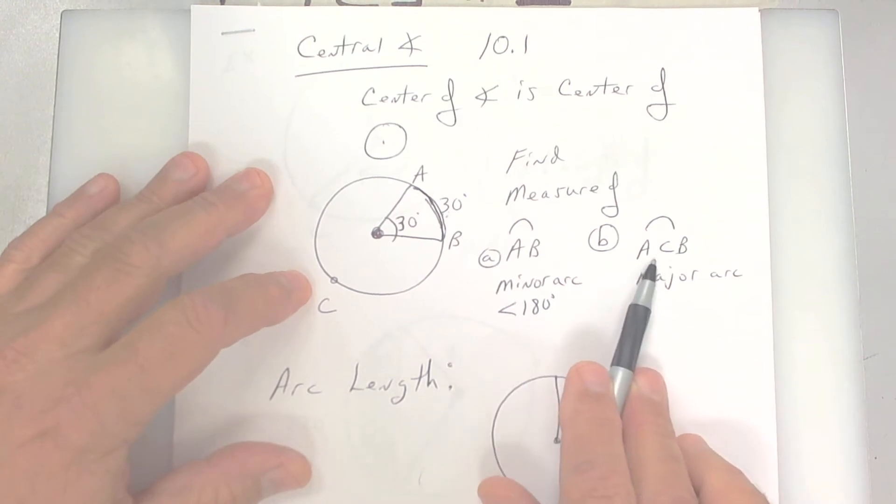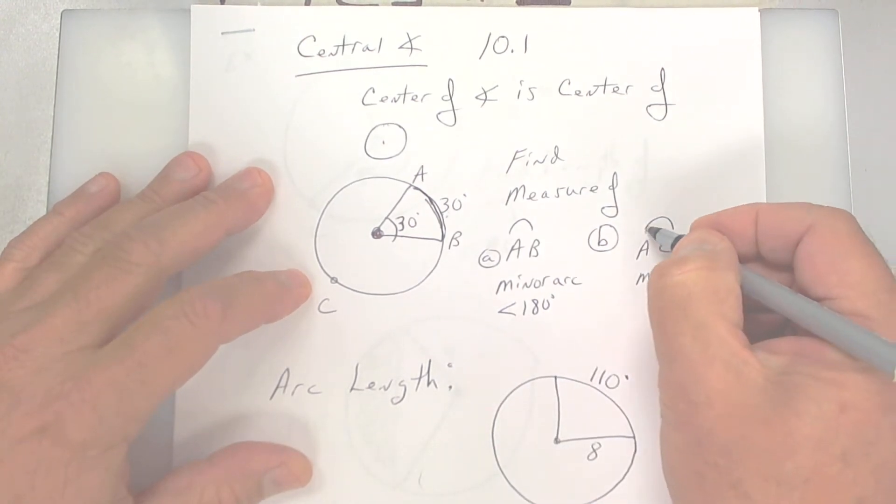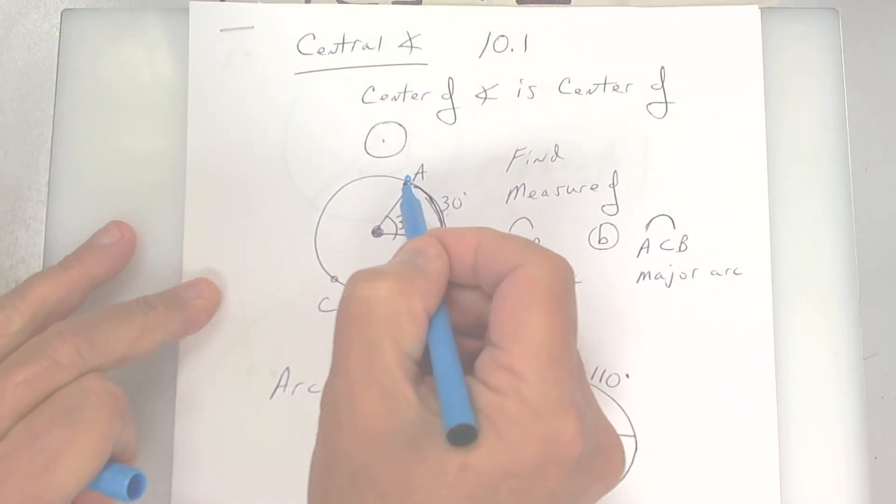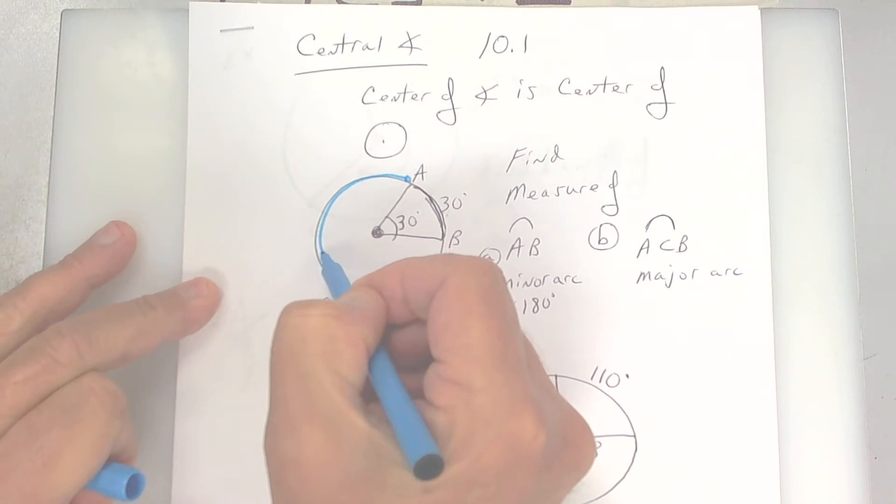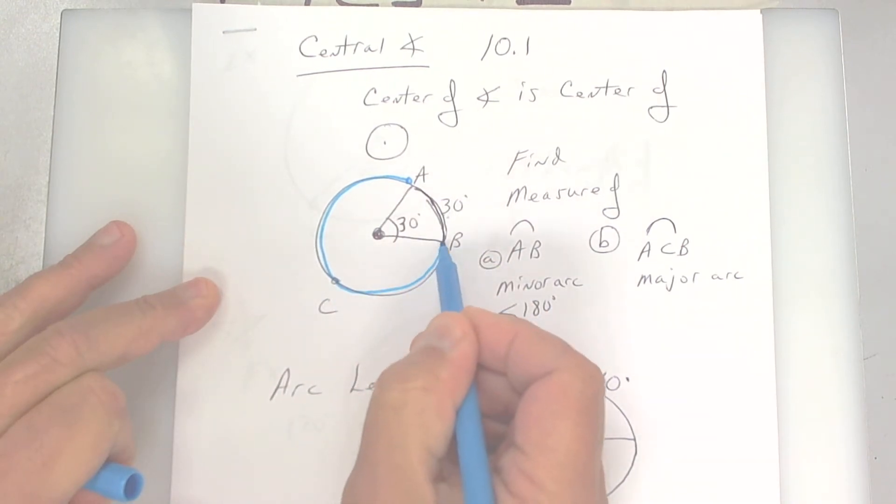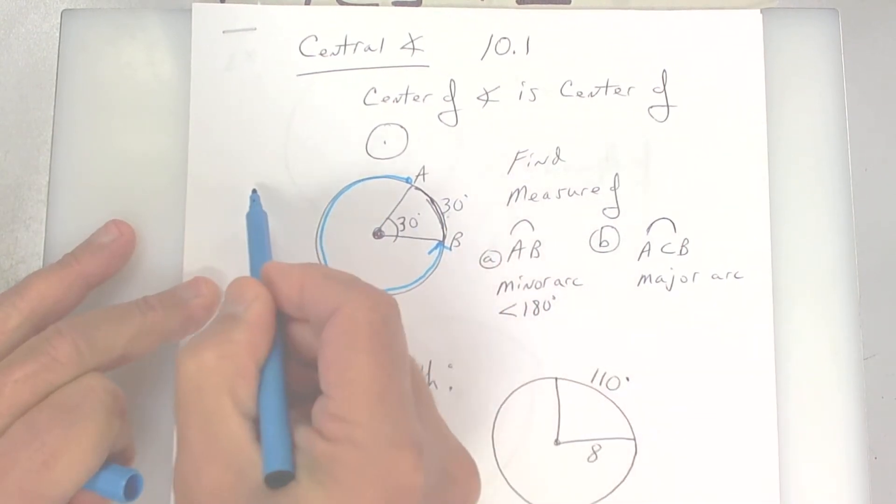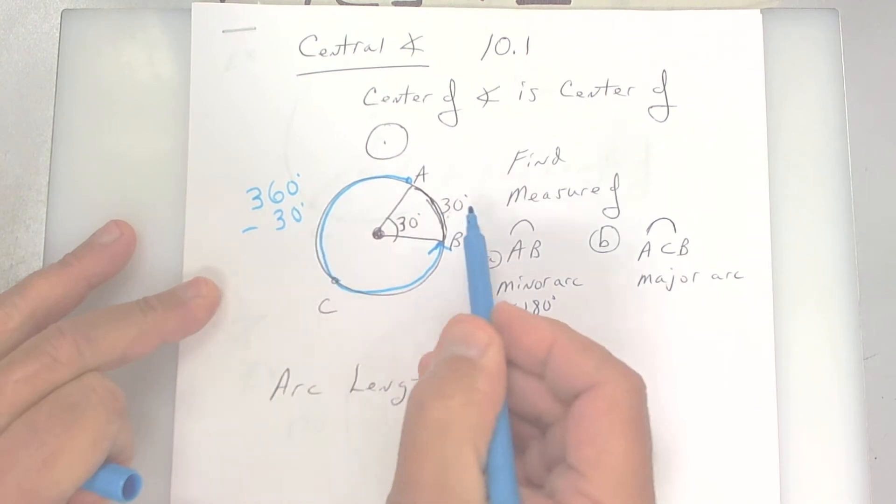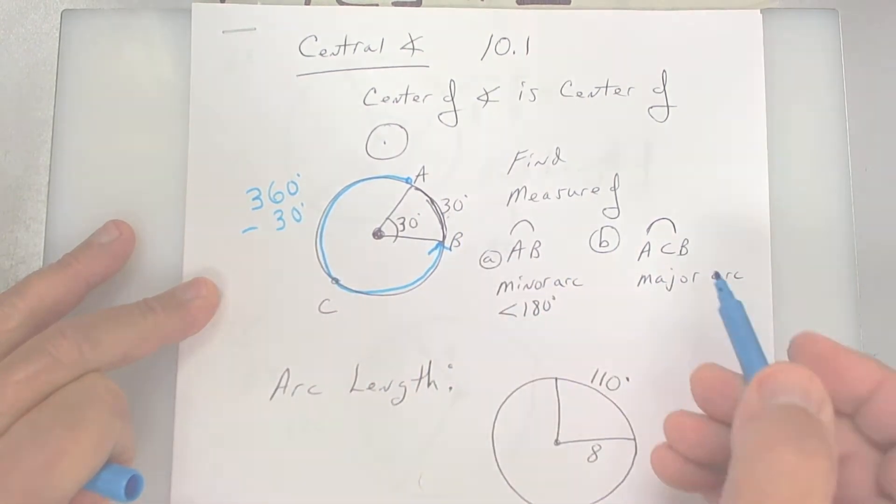Now, here they want you to find this major arc. So I'm going to use a different color. So they want you to go from here all the way around this way to here. Well, the whole circle is 360 degrees. So you would take 360 minus 30, which is what this one is right here, and you would get 330 degrees.